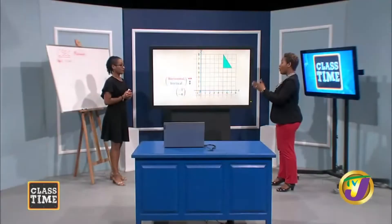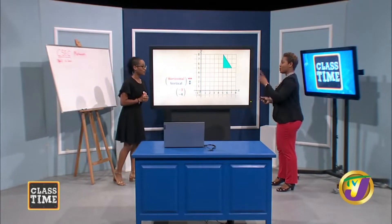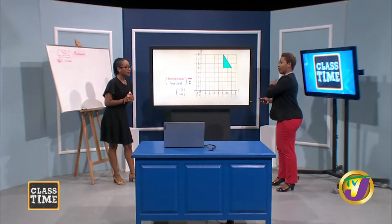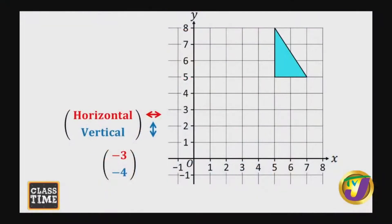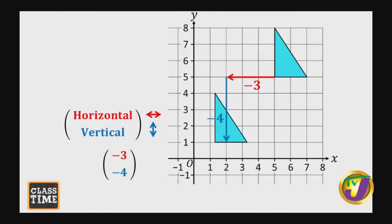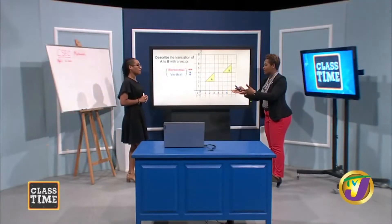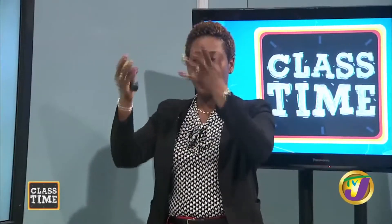Here both values are negative. Positive was right for the top value and upward for the lower value, so now it's left and down. We've gone three units to the left and four units downward. So our translation vector tells us how many units to move — how many slides — and it also gives us direction: whether left or right, or upward or downward.